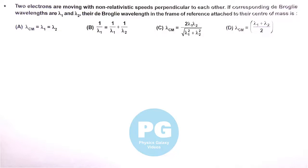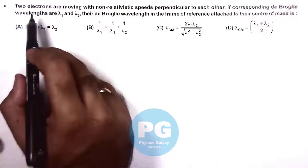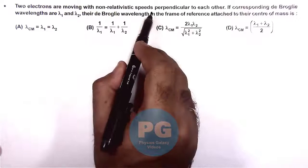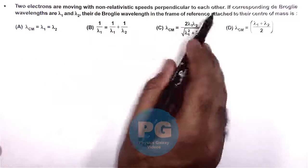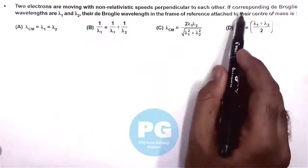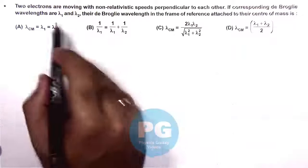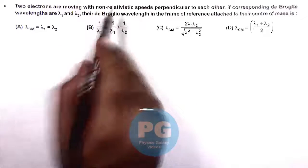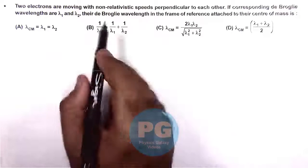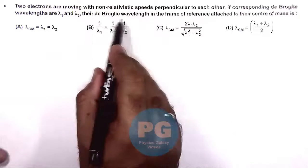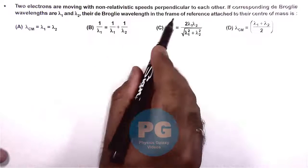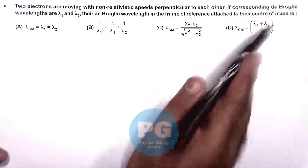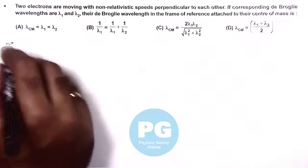In this question, we are given that two electrons are moving with non-relativistic speeds perpendicular to each other. If the corresponding de Broglie wavelengths are lambda 1 and lambda 2 for these two electrons, then their de Broglie wavelength in the frame of reference attached to their center of mass is what we are required to calculate.